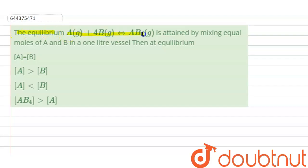+ 4B equilibrium AB4 is attained by mixing equal moles of A and B in one liter vessel. Then at equilibrium: [A] = [B], [A] > [B], [A] < [B], or [AB4] > [A].